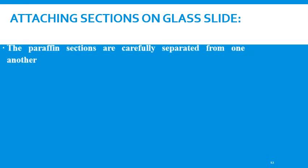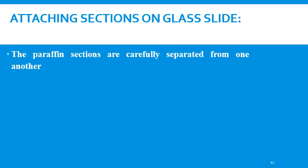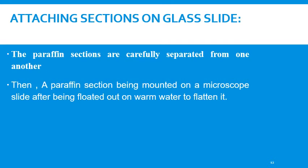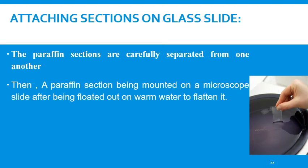The next step is attaching sections to the glass slide. The paraffin sections are carefully separated from one another, and then a paraffin section is mounted on the microscope slide after being floated out on warm water to flatten it. The result of the previous steps is a slide containing a piece of tissue held within the paraffin wax block.